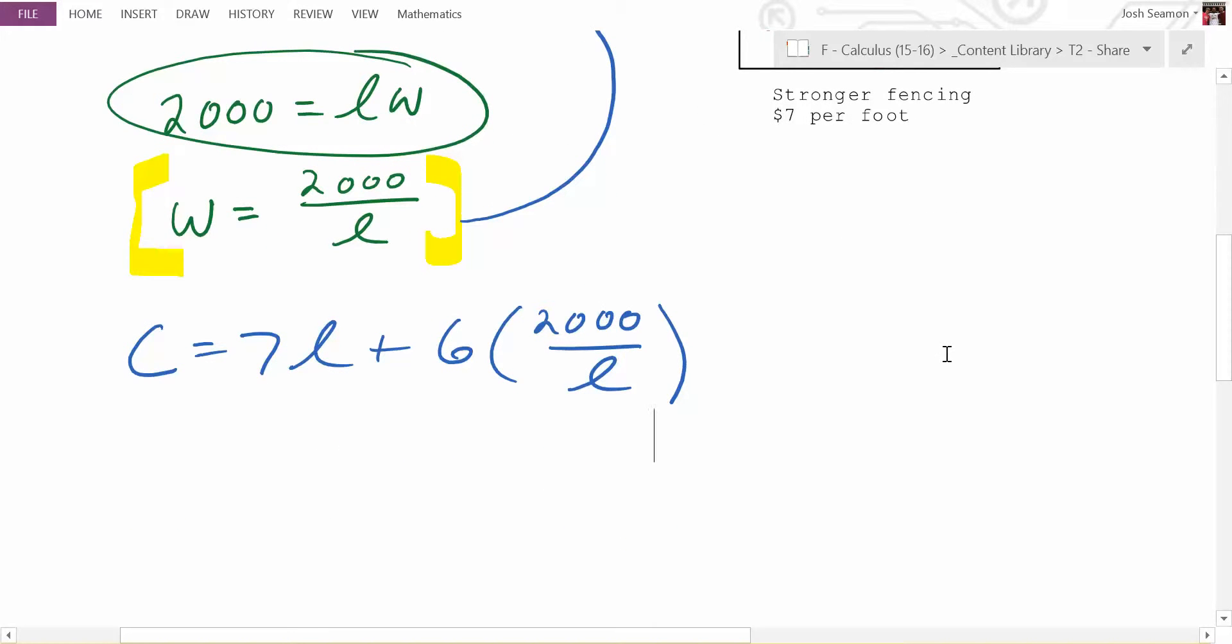What do we want to do with our cost equation? We want to find where it's a minimum. We want to find out where it's a minimum. So what is the process we have used for finding where it's a minimum? Take the derivative and set it equal to zero. Before you take the derivative on this, you're going to want to rearrange this. What are you going to want to do to this before you take the derivative?